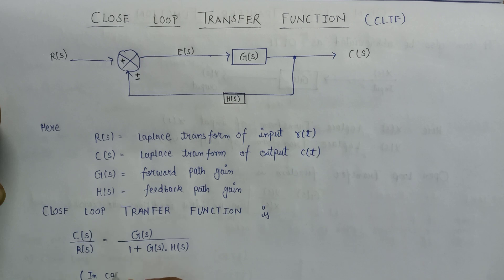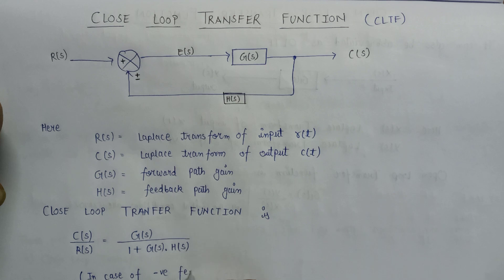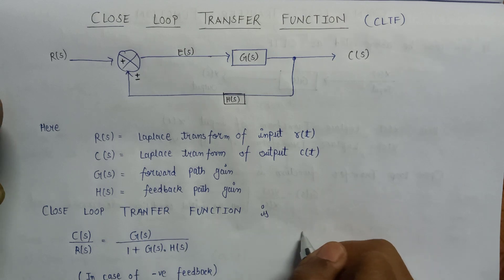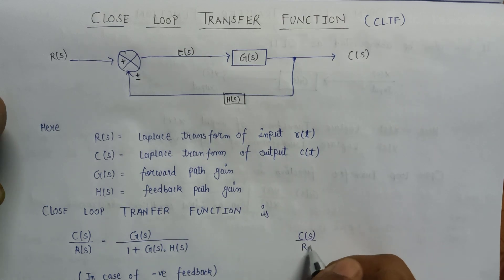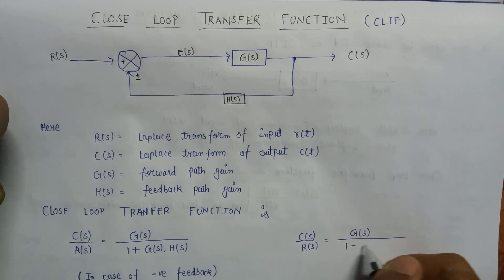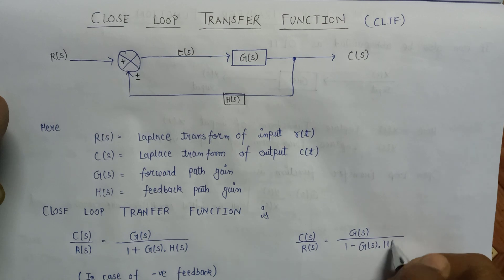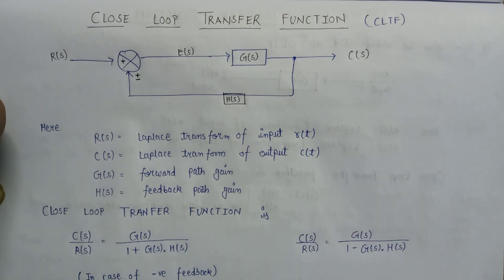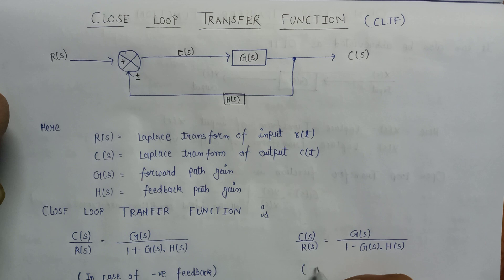In case of negative feedback, C(s) over R(s), that is the closed loop transfer function, is equal to G(s) divided by 1 minus G(s) into H(s) in case of positive feedback. Thank you.